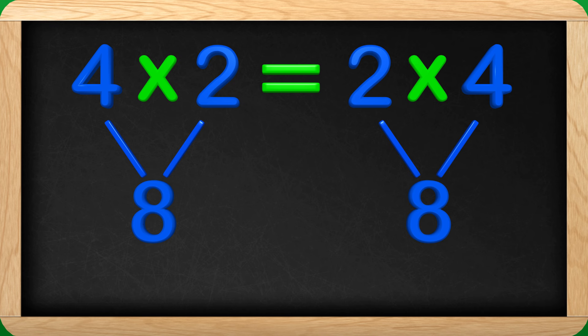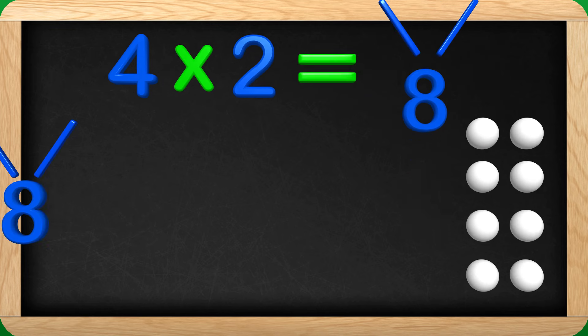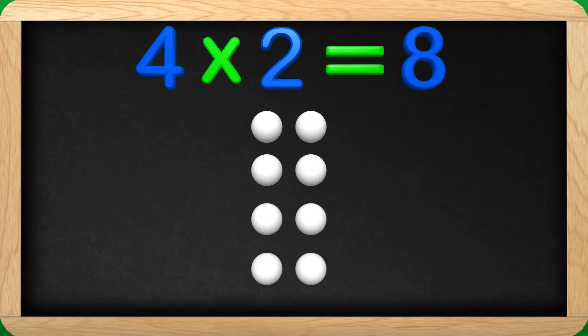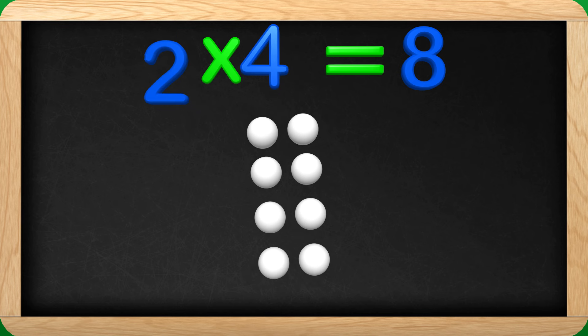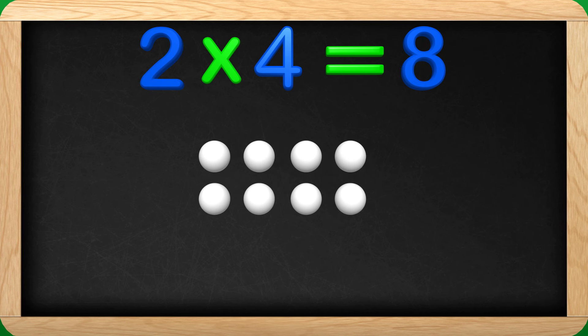And to finish, I want to show you the array of balls my friend showed me. Here we have 4 times 2 in an array which gives us 8 balls total. Now if we switch the numbers around, it turns our array to look like this. This is 2 times 4. Even though the array looks different, there are still 8 balls. Because of the commutative property in multiplication, it does not matter which number is first because the product or answer will be the same.